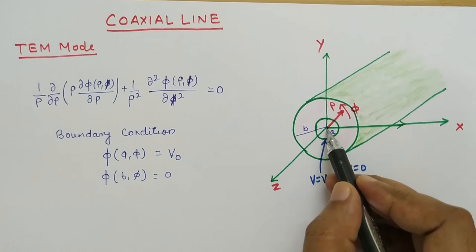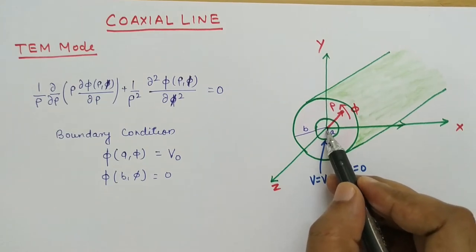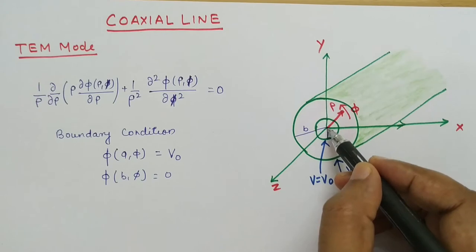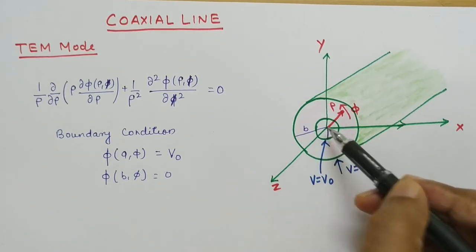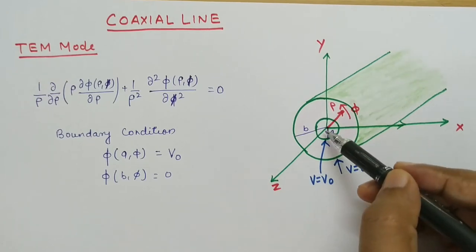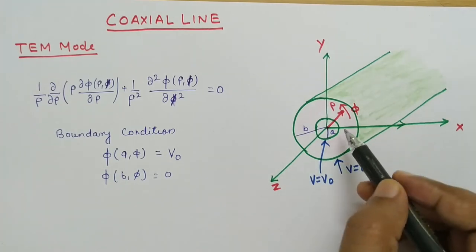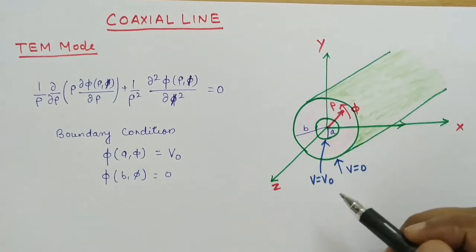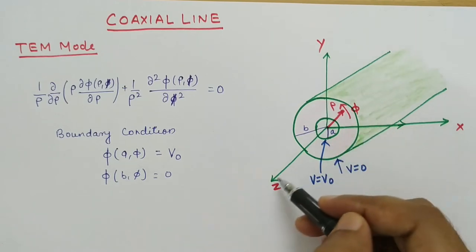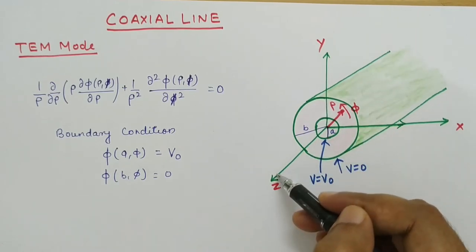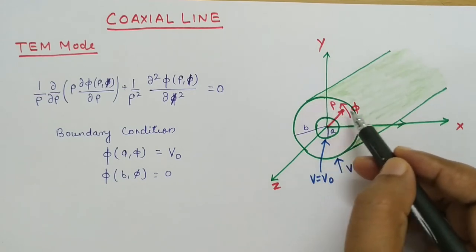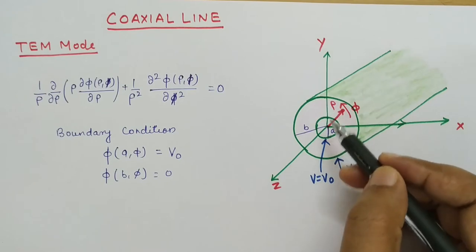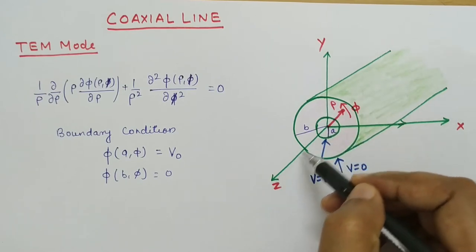A coaxial line has two concentric conductors. The inner conductor has radius A and the outer conductor has radius B. This coaxial line is oriented in the Z direction, so X and Y are transverse directions and Z is the longitudinal direction. In the cylindrical coordinate system, rho and phi are transverse components and Z is the longitudinal component.